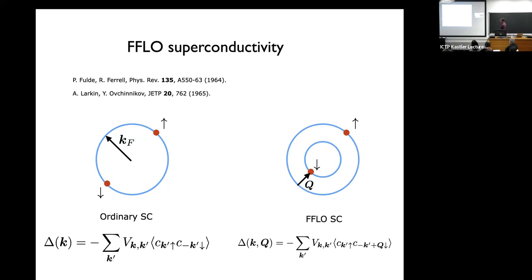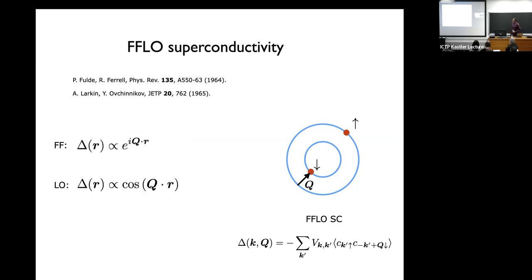That's ordinary superconductivity — we can solve the linearized gap equations and understand basically everything. By contrast, the FFLO state involves pairing not between k and minus k, but there is some net momentum Q, which is the momentum of the center of mass of the Cooper pairs. You can see the difference in the linearized gap equation: it involves fermions at k and minus k plus Q.